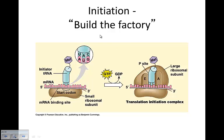The first phase is initiation — we're building the factory. The small subunit attaches to the five-prime cap, which signals the large subunit. Then AUG — our start codon — brings in the transfer RNA using the anticodon molecule. In this case, UAC codes for methionine, which starts the production of the protein. The large subunit is aligned so that methionine is in the P site, and the A site is open for the addition of the next transfer RNA molecule.